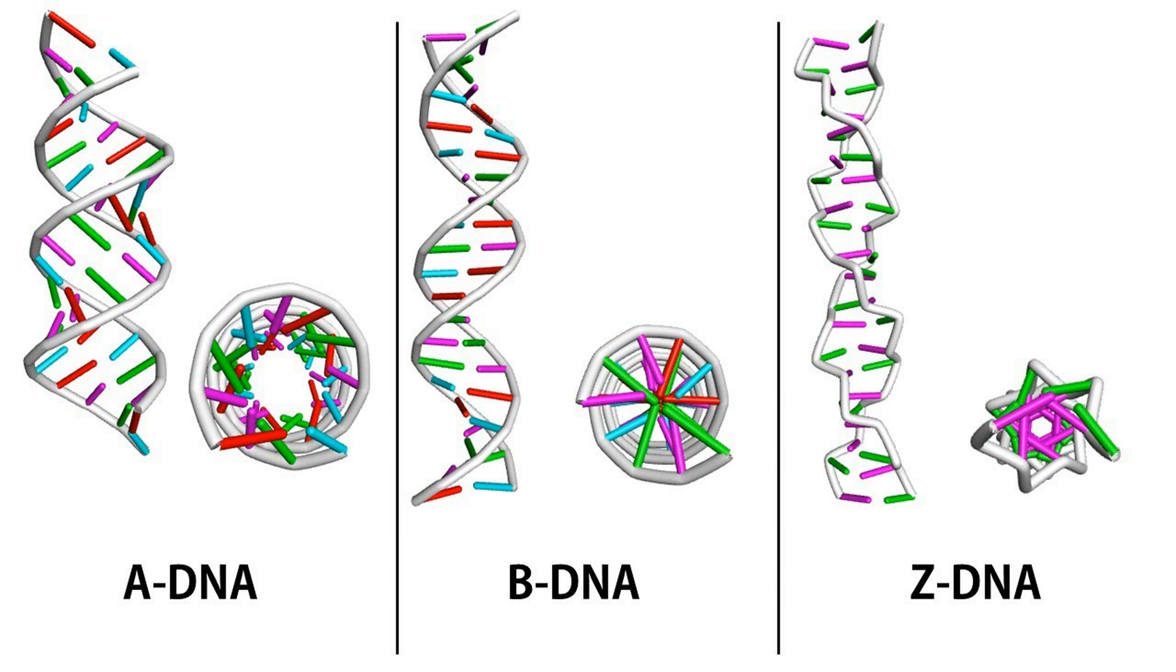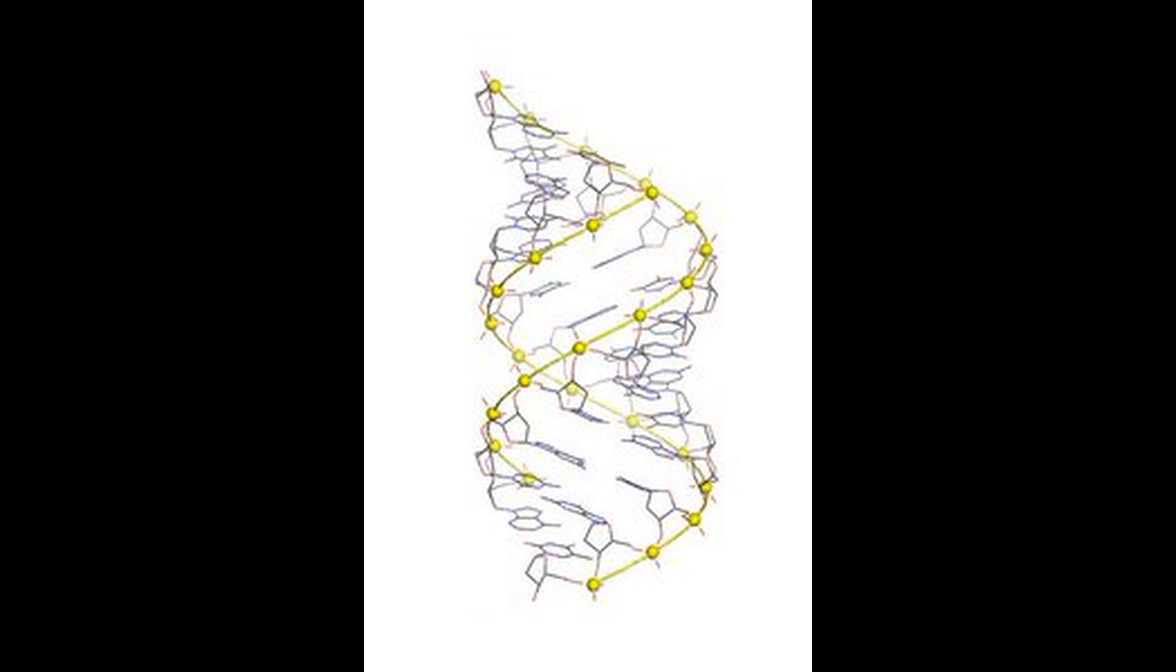The other types are A-DNA and Z-DNA. A-DNA is similar to B-DNA, as it is right-handed and also has different major and minor grooves. However, the helix of A-DNA has a larger width and is compressed along its axis. The major groove is narrow and deep, while the minor groove is wide and shallow.